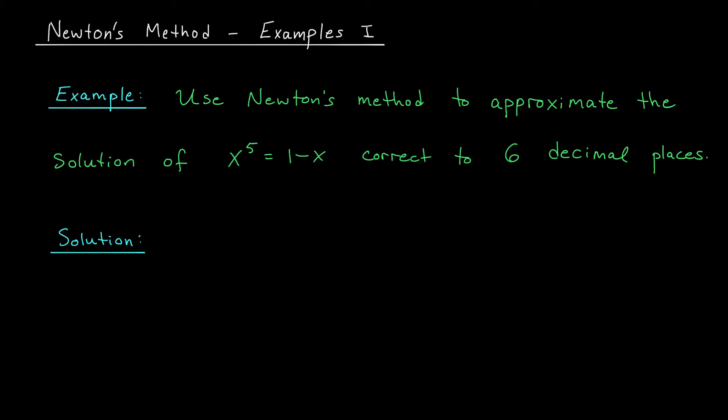So to start this problem, we should recall the statement of Newton's method. Remember that this technique allows us to find the roots of an equation f of x is equal to 0. That's not what we have here, so we have to write it in that form. We'll move everything over to the left just as we did in the overview, and we'll define f of x to be the function x to the 5 plus x minus 1. We want to approximate the solution to f of x is equal to 0.